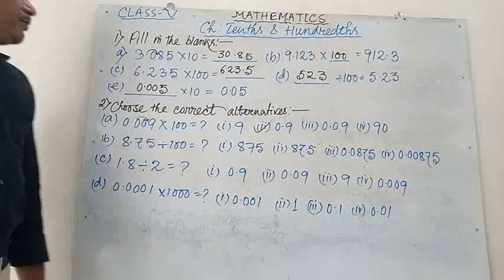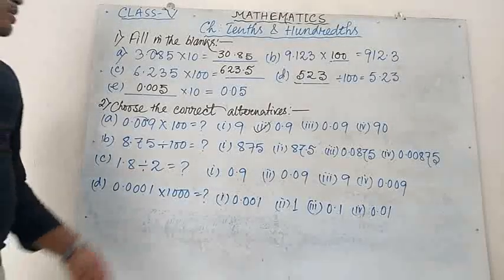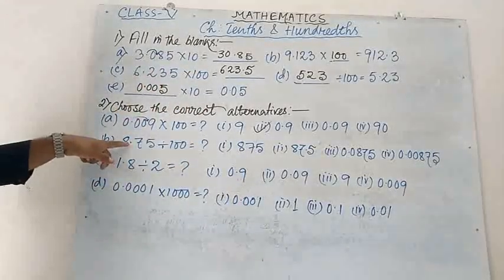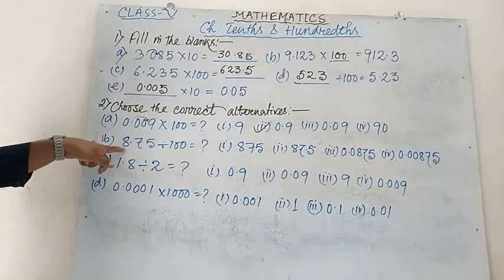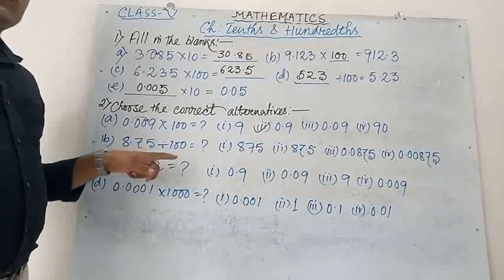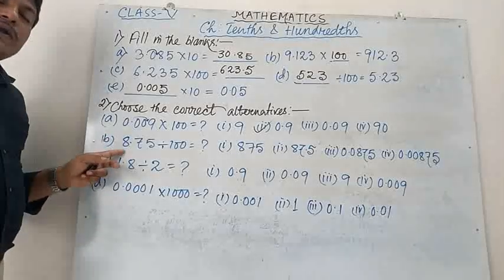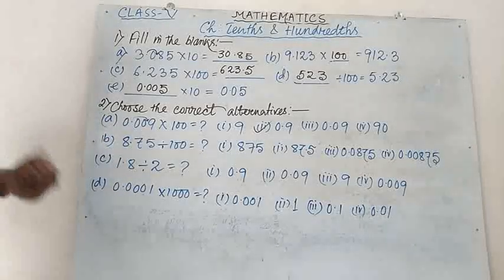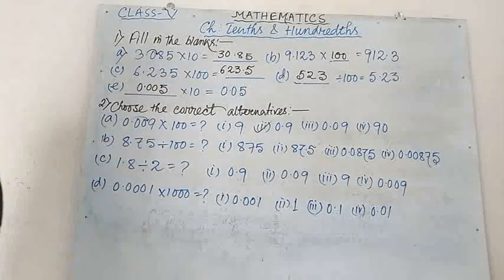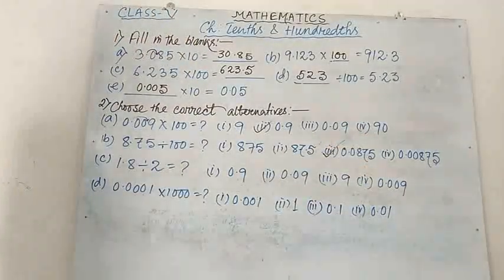Number B: 8.75 divided by 100 equals to what? In case of division, the point will shift to the left. By 1 digit the point shifts before 8, and we have to divide by 100, so we shift the point 2 digits. We need to add a 0, so the answer will be 0.0875. Option 3 is the correct option.